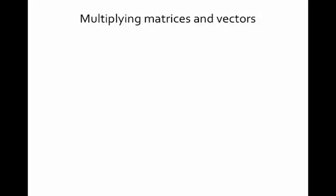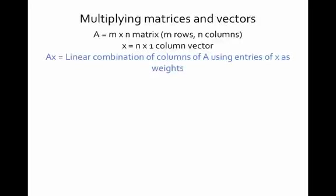Now that we've talked about linear combinations, we can talk about how to multiply a matrix times a vector. We start with A, which is an M by N matrix — that means M rows and N columns. And X is going to be an N by 1 column vector.